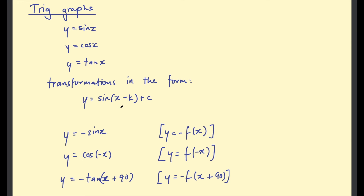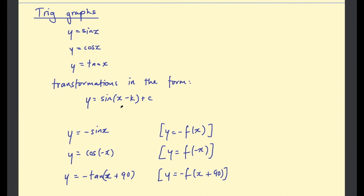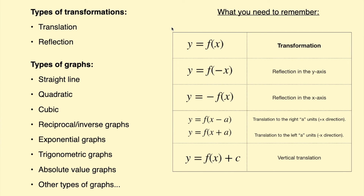That's a quick useful summary of transformations of trig graphs and the other graph types you need to know. That's everything you need to know about graph transformations for GCSE mathematics. As long as you can remember the four rules, you'll be fine — they apply the same way to any graph. I'll leave some practice questions in the description. If you appreciated this video, please leave a like, subscribe for more content, and I'll see you in the next one.